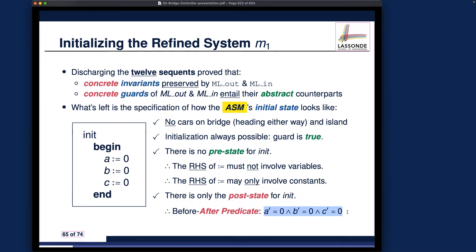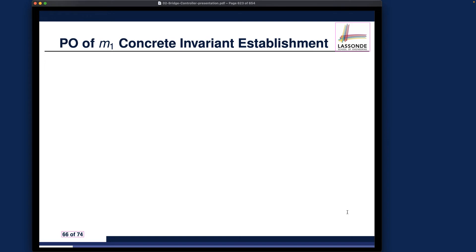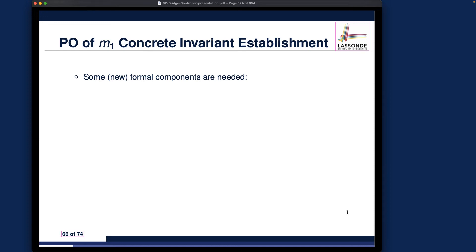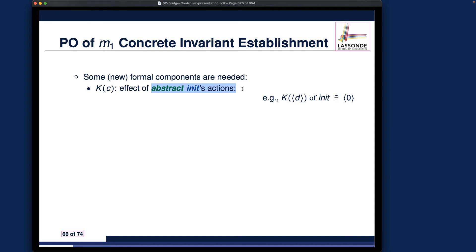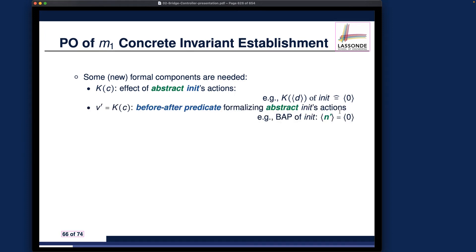We will need the before-after predicate when we formulate a sequent in just a moment. For the formal components, we already spoke about them earlier. For the effects of the abstract init actions — which we call K here — for example, we only have one variable to be initialized, initialized to zero. We talked about the before-after predicate before, so this part is not new.